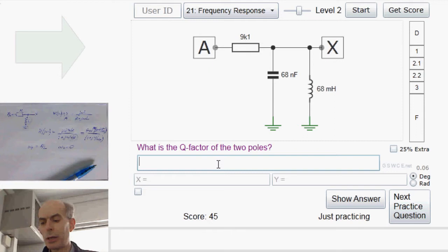The Q factor here is still the resistance, which is 9k1, times the square root of the capacitance, which is 68 nF, divided by the inductance, which is 68 mH. Fine.